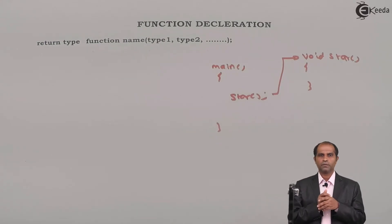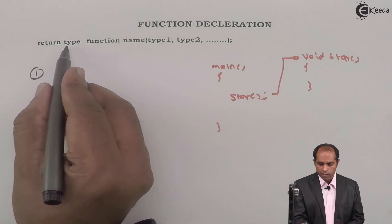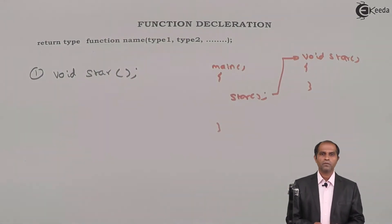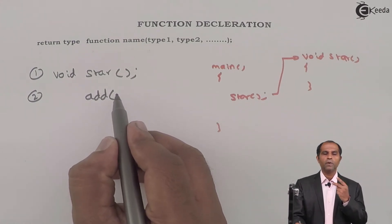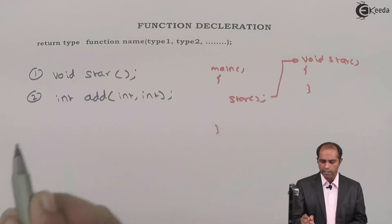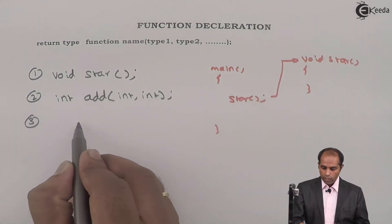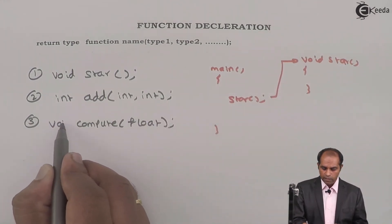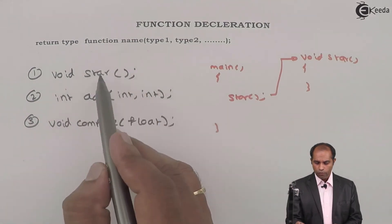Let's write declarations for three functions. The first is 'star': return type is void, function name is star, it doesn't accept any value — so round brackets and a semicolon: void star();. The second is 'add': it accepts two integer values and returns an integer — int add(int, int);. The third is 'compute': it accepts one float value and returns nothing — void compute(float);. So the format is: return type, function name, parameter types, and a semicolon.